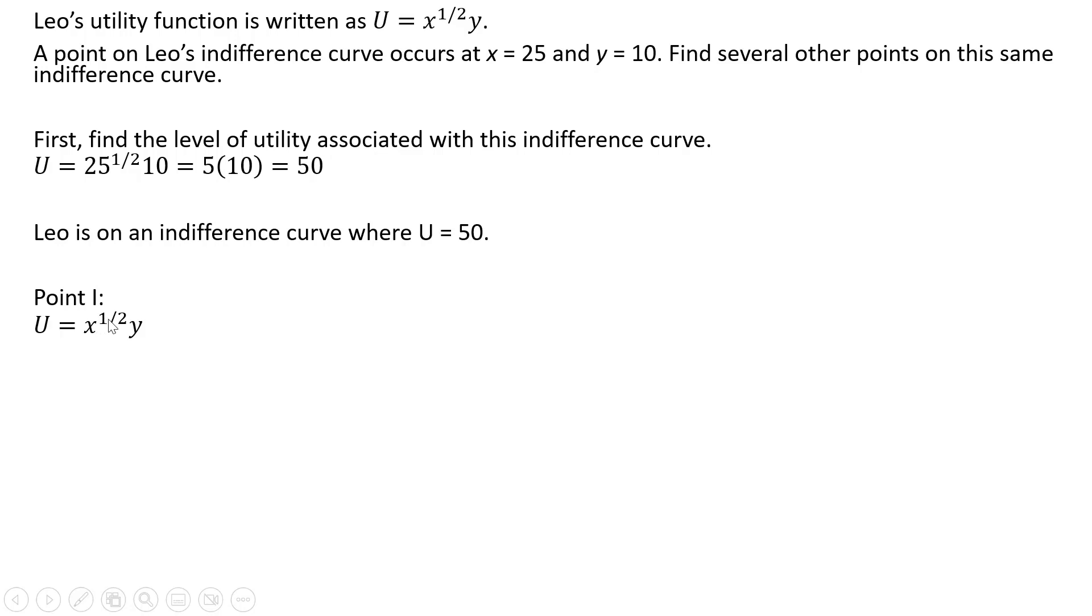So the first point, take the utility function, set U equal to 50, and we can let x equal 1. I could let x equal any value, but letting x equal 1 is simple enough. Plugging this 1 in for x and now solving for y. The square root of 1 is just 1, so y equals 50. So one point on an indifference curve where utility equals 50 occurs where x equals 1 and y equals 50. If we're to plug this consumption point back into the utility function, utility would equal 50.